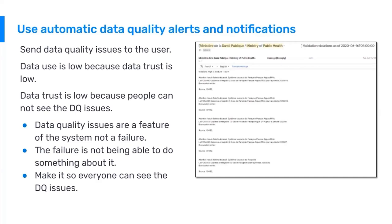That minimizes the amount of trust that a user may have in the system. One way to make sure that we're improving trust is to make the data quality issues as obvious as possible when they are detected, and that's best done through alerts and notifications.